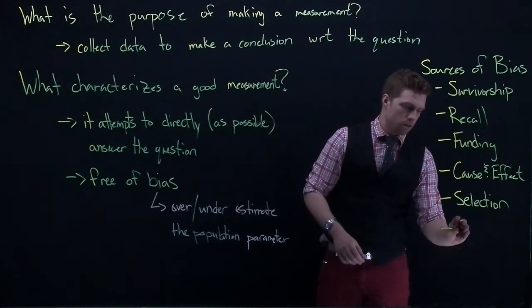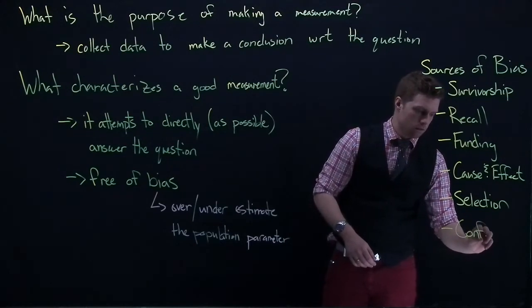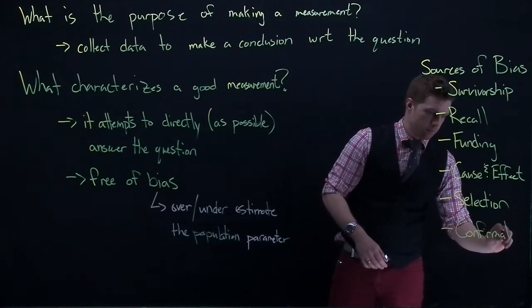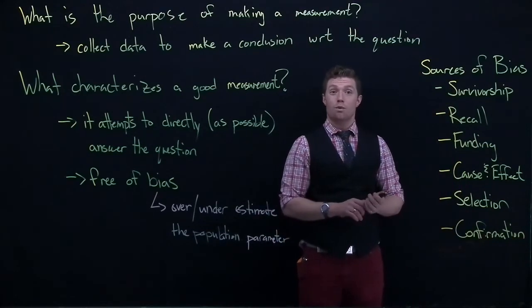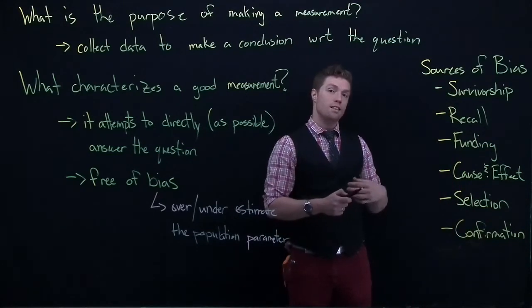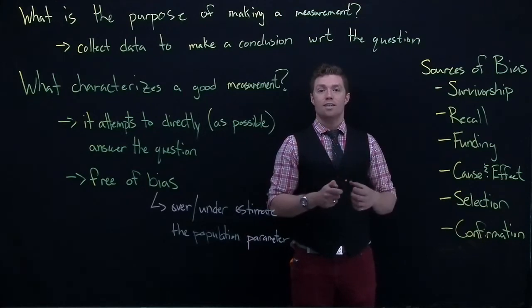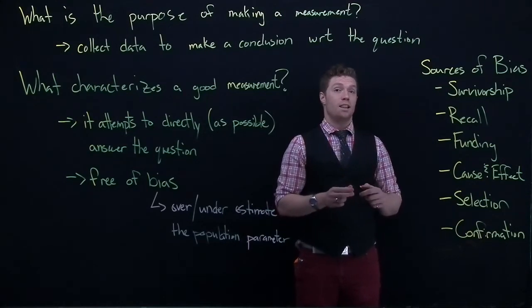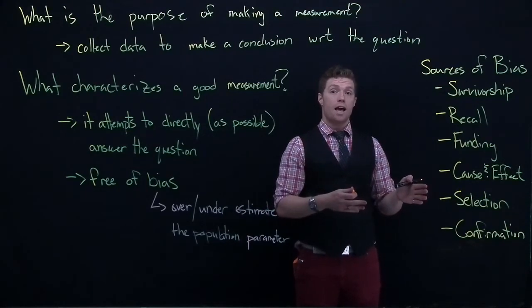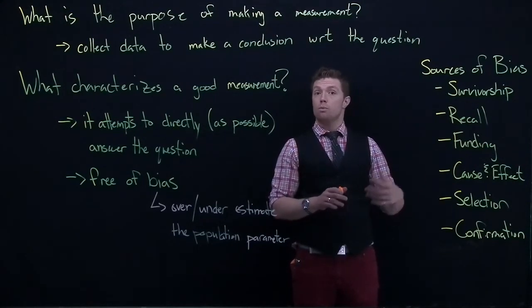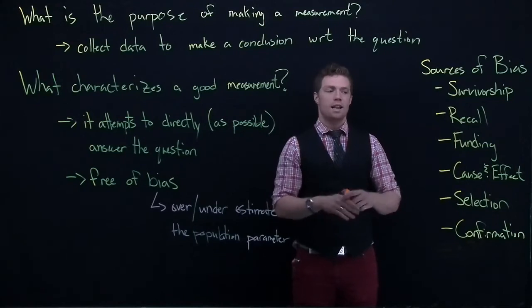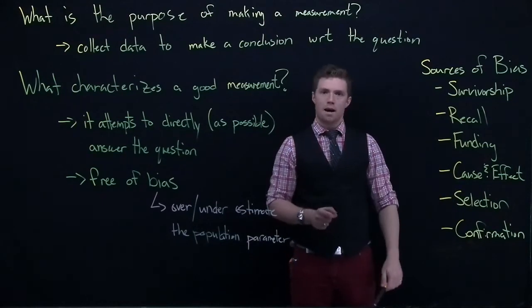Okay. Last one that we're going to talk about is confirmation. And confirmation bias is basically we have a conclusion that we already know and that we have, and we are trying to collect data that already supports that conclusion. And so maybe we're only looking at data that actually supports that and we don't include all the data. And so that can give us bias as well.